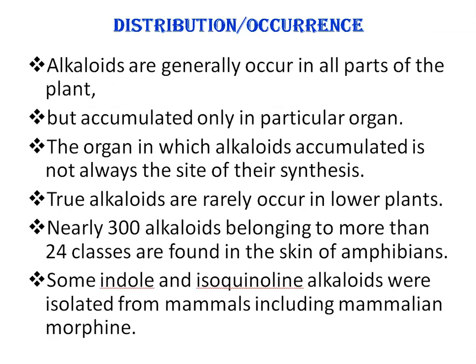Next is the distribution or occurrence of alkaloids. Alkaloids were isolated from many different terrestrial and marine sources, including amphibians, arthropods, mammals, insects, sponges, fishes, fungi, bacteria, and of course humans.